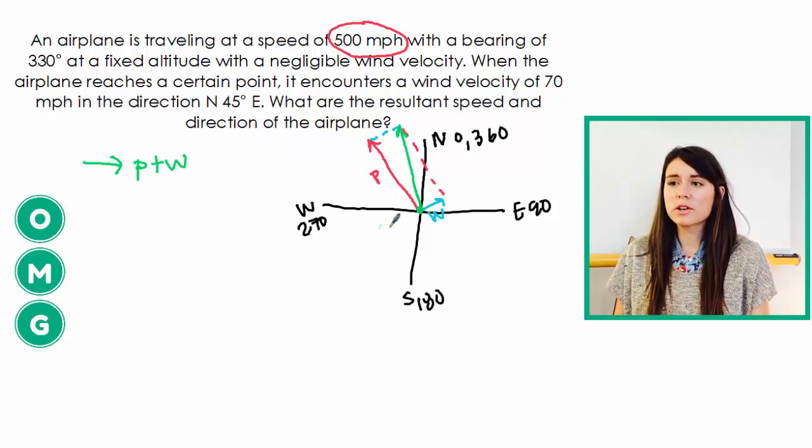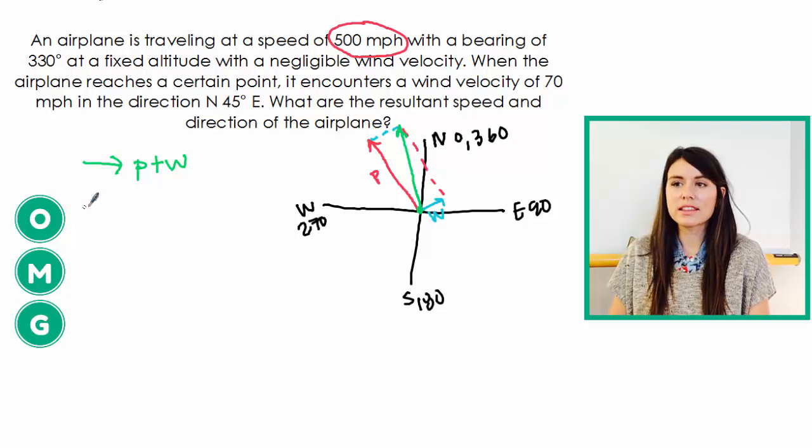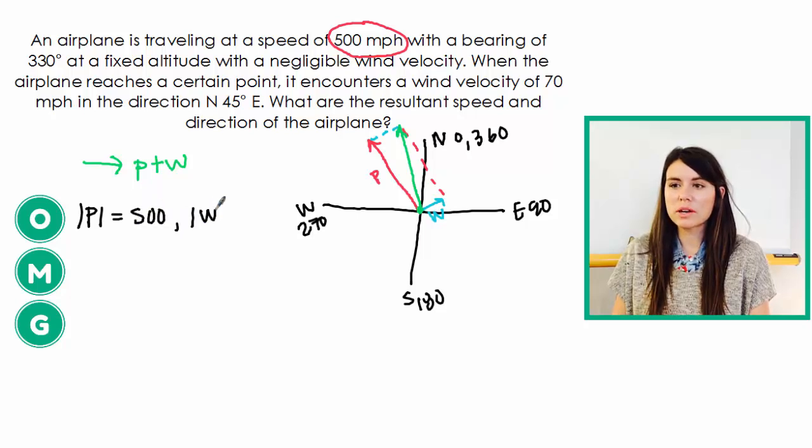So the first thing we observe is just all of this. This is all the information that we're given at the beginning. Some other things that might be helpful to write down is that the magnitude of the plane vector is 500 and the magnitude of the wind vector is 70.